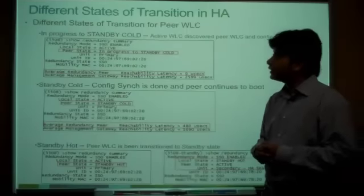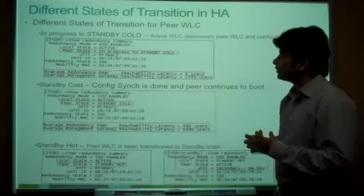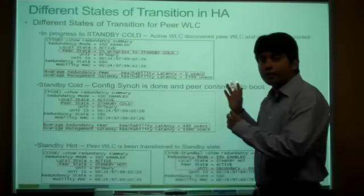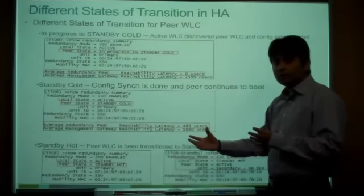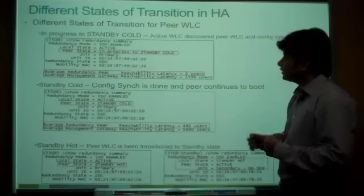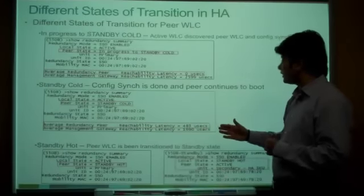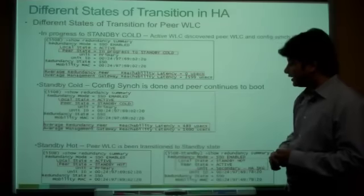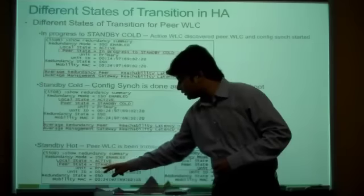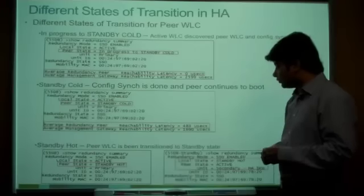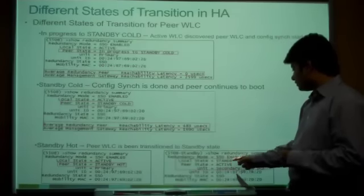Let's look at the different states of transition in high availability. When the controller is booting with HA already configured, issuing 'show redundancy summary' on the active controller shows the peer state as 'in progress to standby' — this is where the active WLC has already discovered the standby and configuration is syncing. Then the standby moves to 'standby code' state, where config has synced and is being initialized. Finally, you will see 'standby hot' state. The local state shows as active and peer state as standby hot. On the standby console, a dashed standby prompt is automatically added, with peer state as active and local state as standby hot.